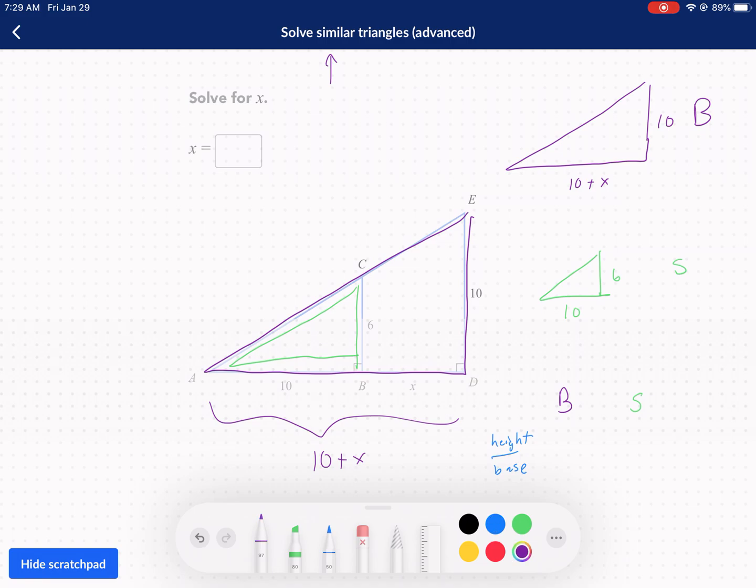For the big, the height is 10. This time we knew the height. The base is 10 plus x. A little bit complicated, but not too bad. Then we have the height for 6. Our base is 10. And now we are set up. This belongs to the big triangle. This belongs to the small triangle. We're comparing both the height over the base for both of them. You have to make sure you stay consistent with that. But now we can cross multiply.